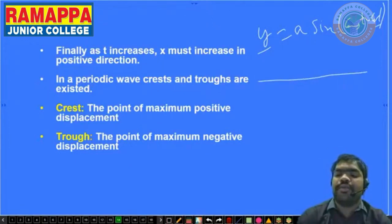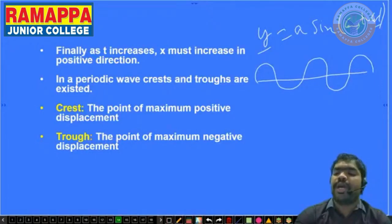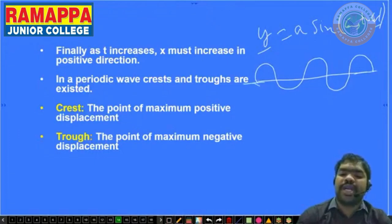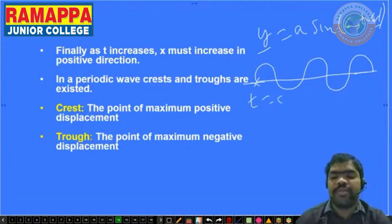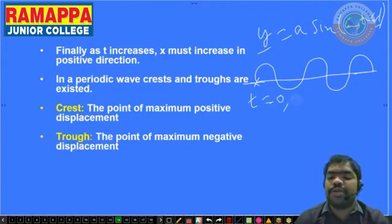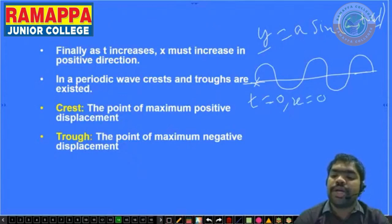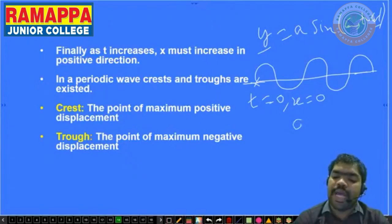At starting time t = 0 and starting position x = 0, the phase value is zero. This is called the initial phase angle — the phase that exists at the starting time and starting position of the wave.